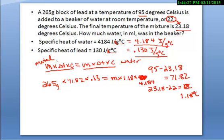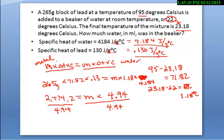So 265 times 71.82 times 0.13 equals 2474.2, is equal to mass times 1.18 times 4.184 equals 4.94. 2,474 divided by 4.94 equals 501.1. So the mass would have to equal 501.1 grams. So you would have 501.1 milliliters of water that we must have added this 265 gram block of lead.